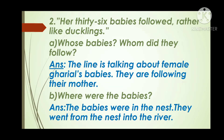Question 2 is also based on the text. The line is: 'Her 36 babies followed, rather like ducklings.' Based on this line we have three more questions. Question A: Whose babies? Whom did they follow? The line is talking about the female gharyal's babies. They are following their mother. Question B: Where were the babies? The babies were in the nest. They went from the nest into the river.